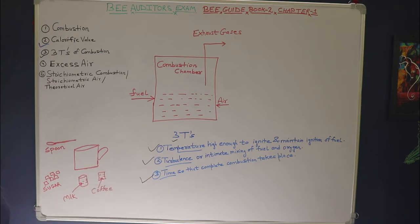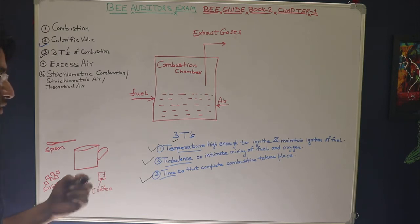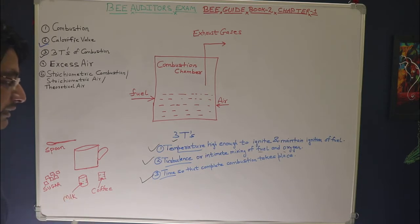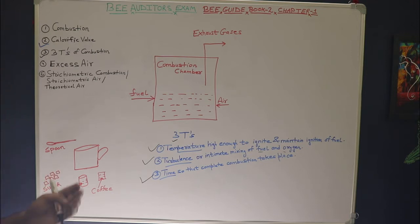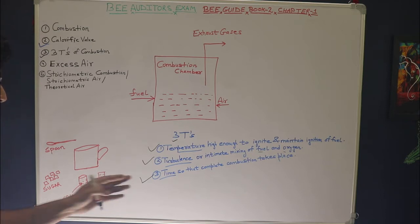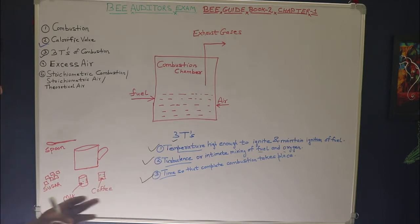The second T is turbulence, which is nothing but the intimate mixing of fuel and oxygen. Combustion is the burning of fuel in the presence of oxygen, so proper combustion will only occur when there is proper mixing of fuel and oxygen. If fuel is in one corner and oxygen is in the other corner of the combustion chamber with no intermixing, then combustion will not be proper.